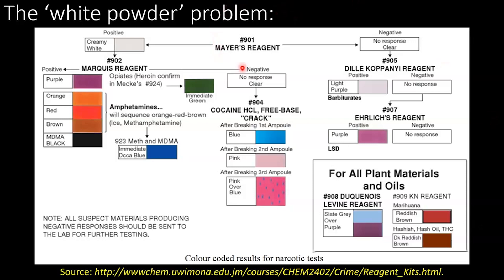Starting with our white powder and no information on what it could be, the first test we can apply is Mayer's reagent. This can either give you a creamy white precipitate in solution — that's a positive test — or the sample gives no response and you still get a clear solution. If we imagine we got a precipitate, the next presumptive test we might apply is the Marquis reagent, which can detect opiates or amphetamines depending on the colour change you see. If we were to get a red colour from this test, that would fall under the banner of amphetamines and would inform the future tests done back in the laboratory.